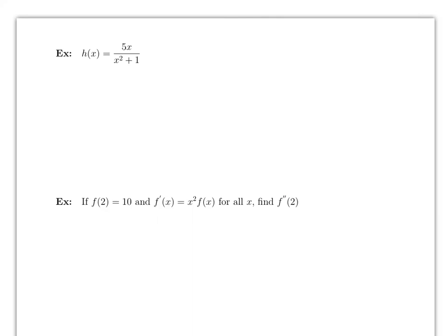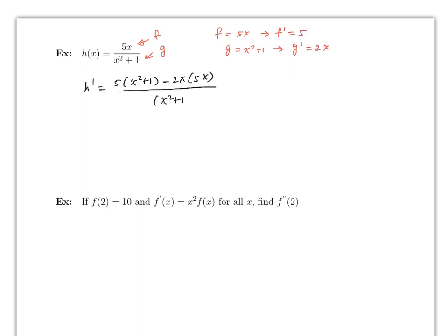Here's another example. F equals 5x, which implies f prime is 5. G equals x squared plus 1, which implies g prime is just 2x. Therefore h prime equals f prime (which is 5) times G, minus g prime (which is 2x) times f, all divided by g squared. This gives 5x squared plus 5, minus 10x squared, divided by (x squared plus 1) squared. Therefore this is negative 5x squared plus 5, divided by (x squared plus 1) squared.